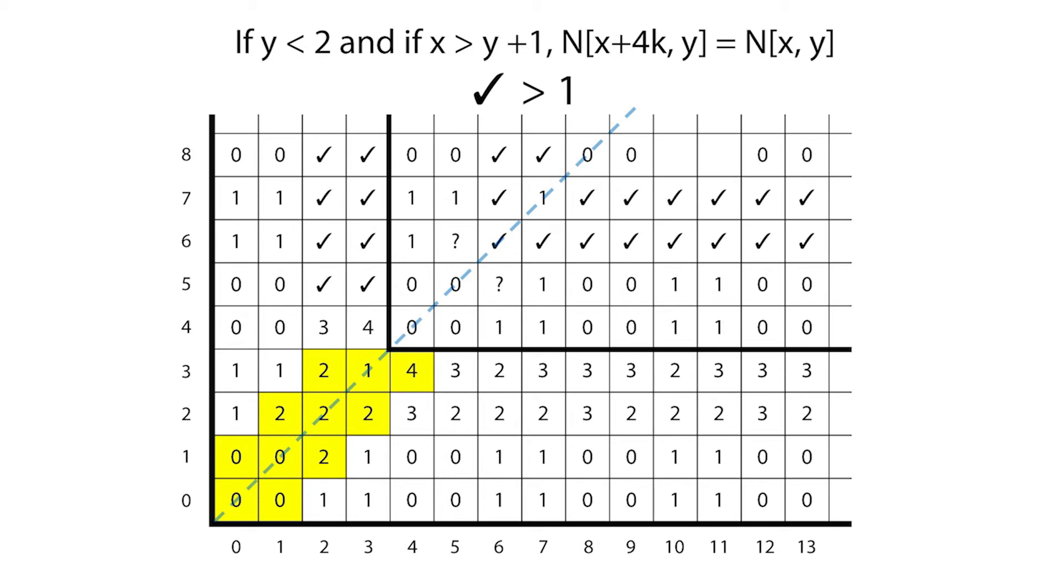Once we've passed them, row two becomes periodic with period four. So does row three. For every row with label less than four, once we've passed the thickened diagonal, the row becomes periodic.